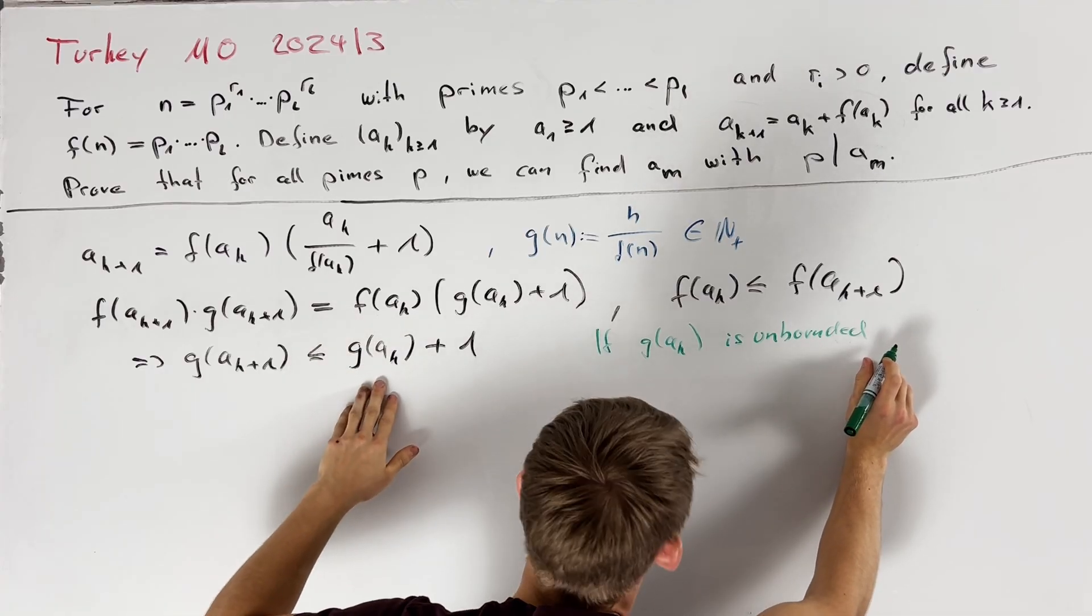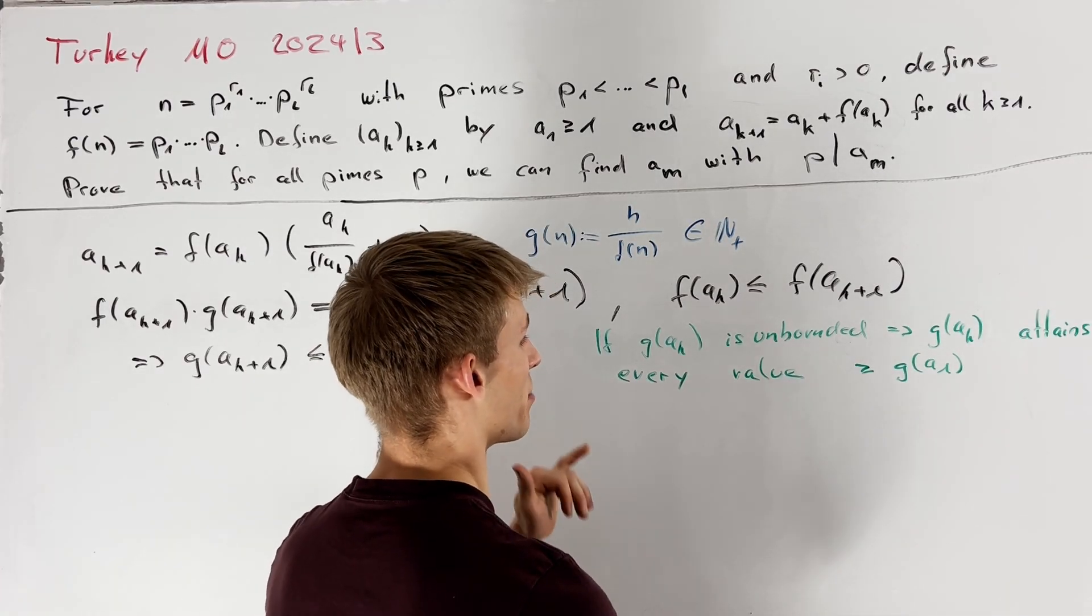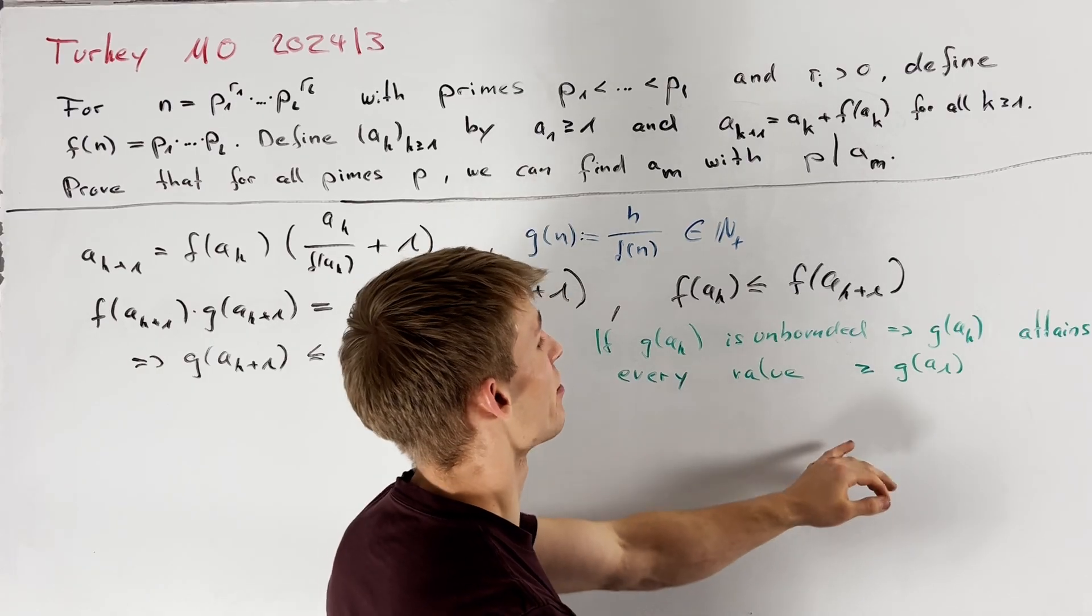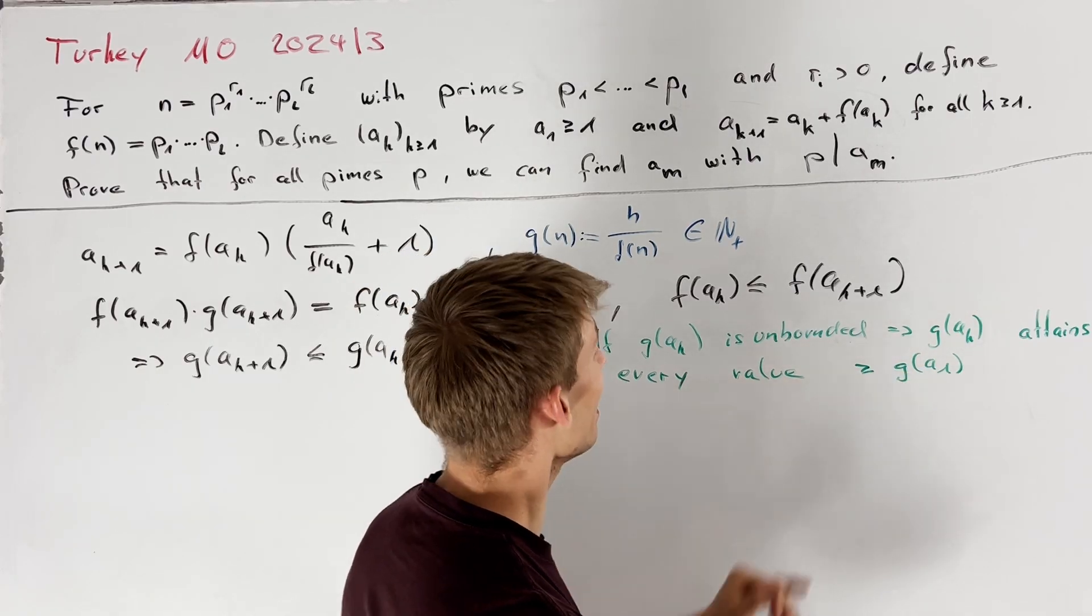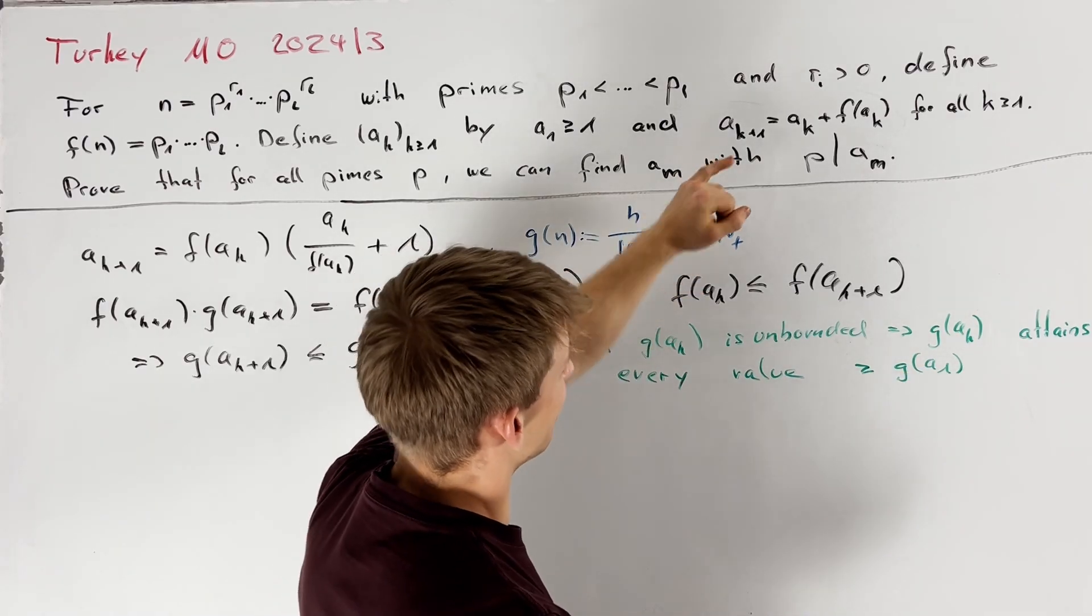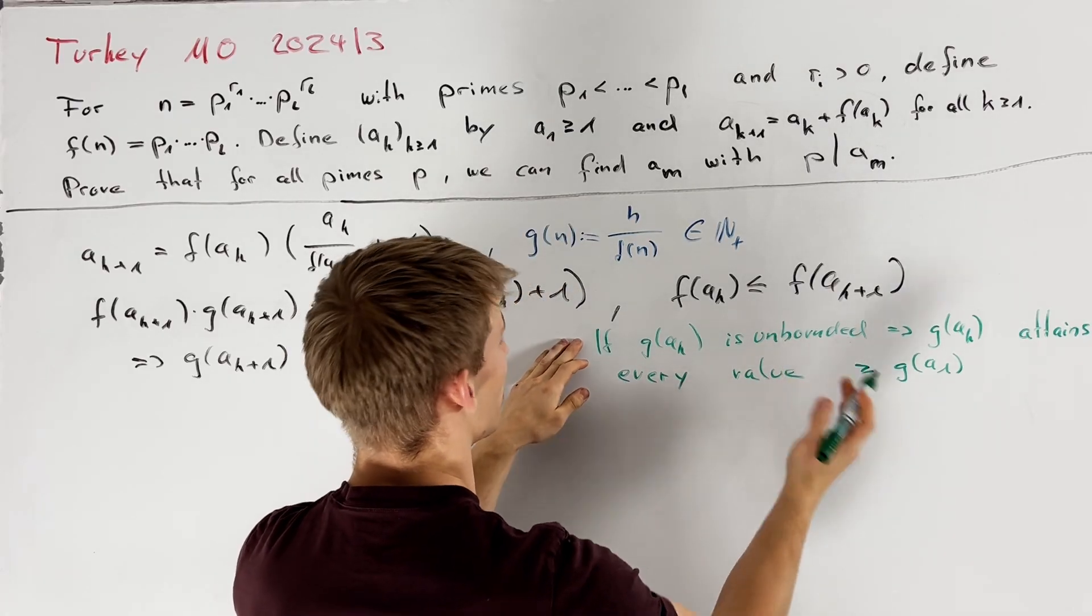This would immediately imply that all prime numbers p divide one of the sequence members g of a_k and they divide a_k and therefore if g is unbounded we are done.